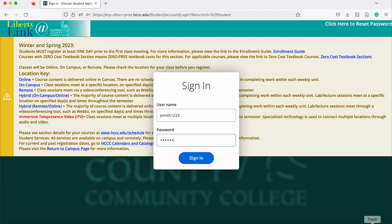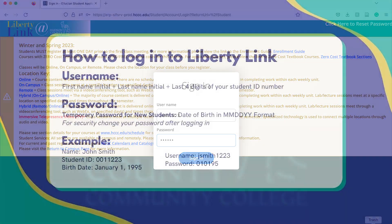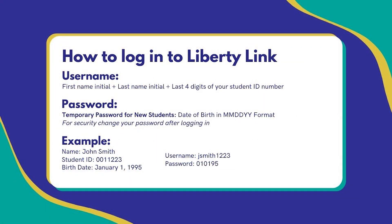Logging in to Liberty Link is only slightly different than logging in to your My Hudson portal. Your username will be the first initial of your first name, your last name, and the last four digits of your ID number. Your password will be your birthday: two digit month, two digit day, and the last two digits of the year. You can go to your My Hudson portal to change your password if you haven't already.